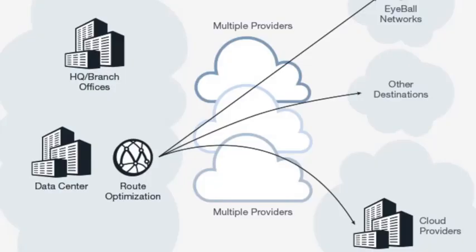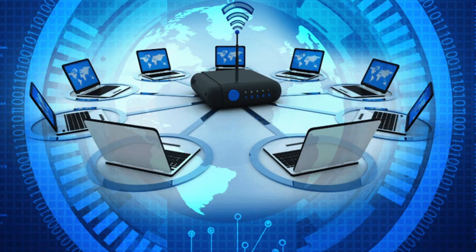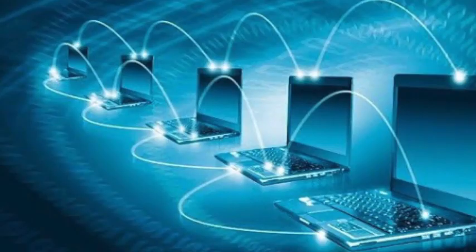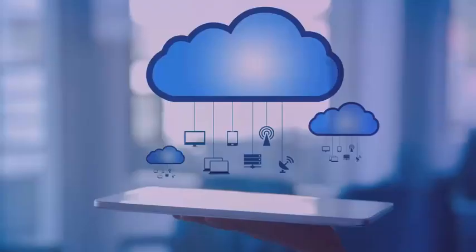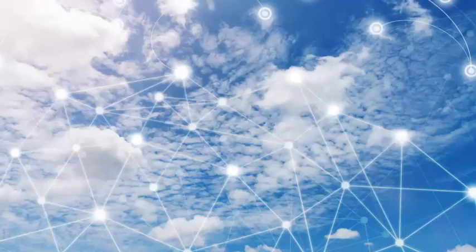SD-WAN is primarily meant for businesses — and for that matter, businesses with branch locations — mostly because it reduces the complexity of the network in terms of design. With SD-WAN, you have all the controls and configurations set up in one central location, which is in the cloud.